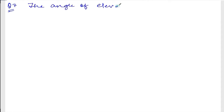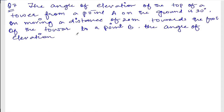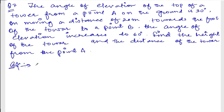Now we are doing exercise 10.4, question number 7. The question says: the angle of elevation of the top of a tower from a point A on the ground is 30 degrees, and on moving a distance of 20 meters towards the foot of the tower to a point B, the angle of elevation increases to 60 degrees. Find the height of the tower and the distance of the tower from point A.